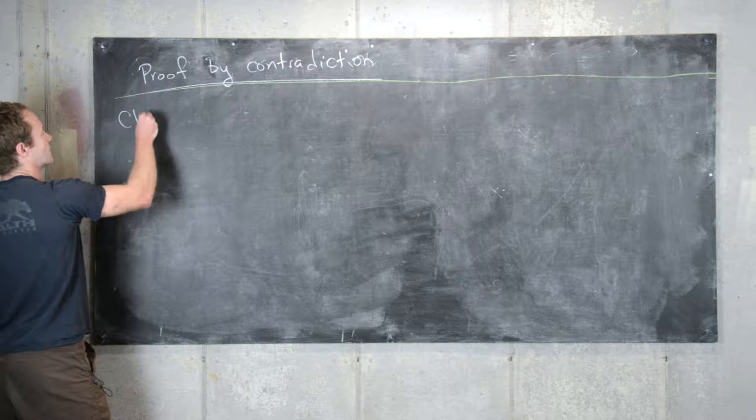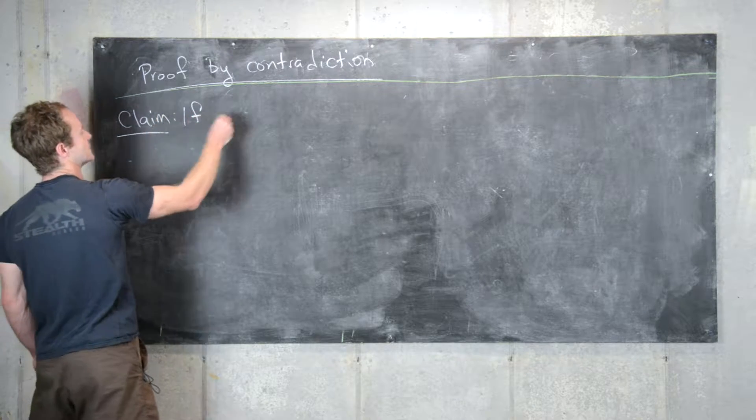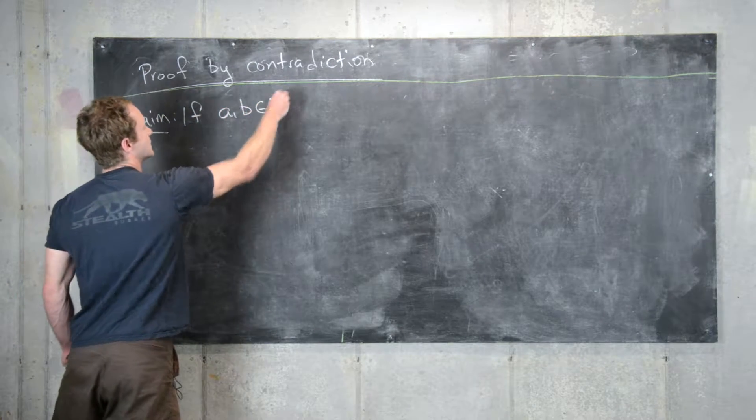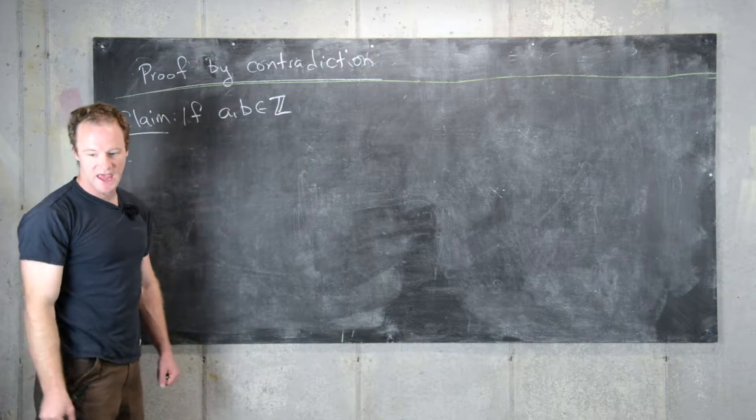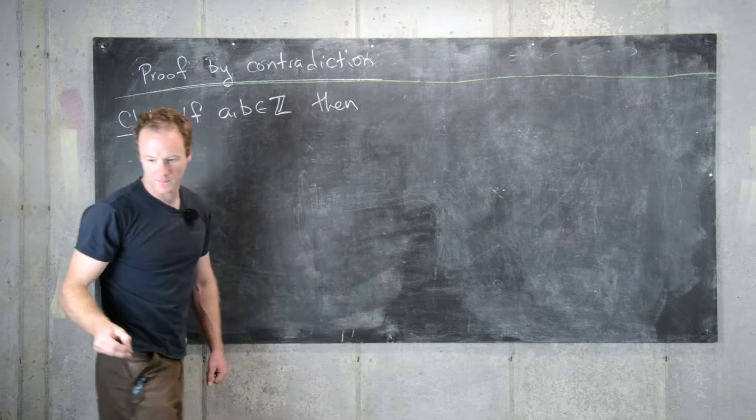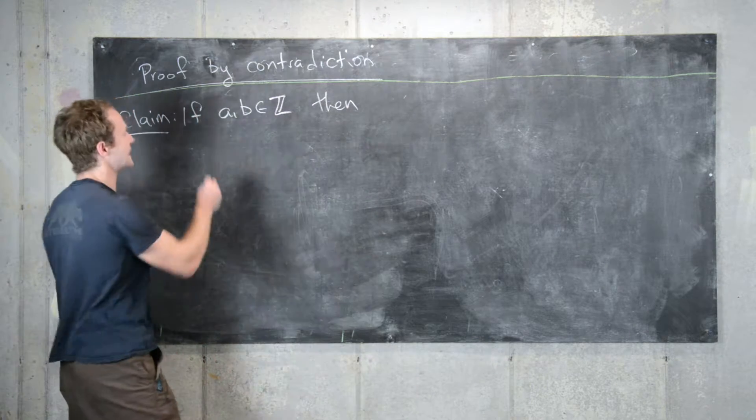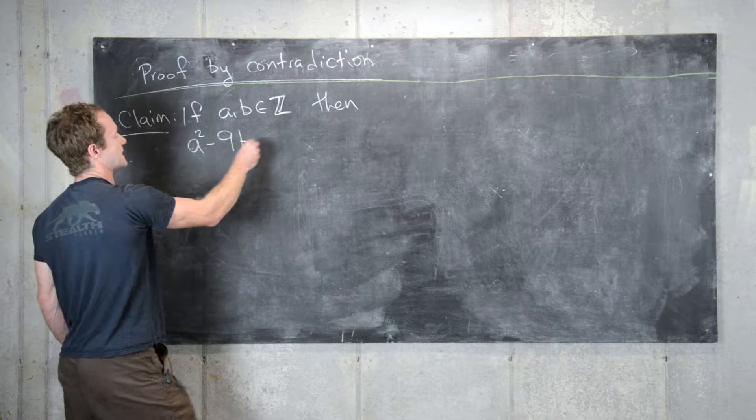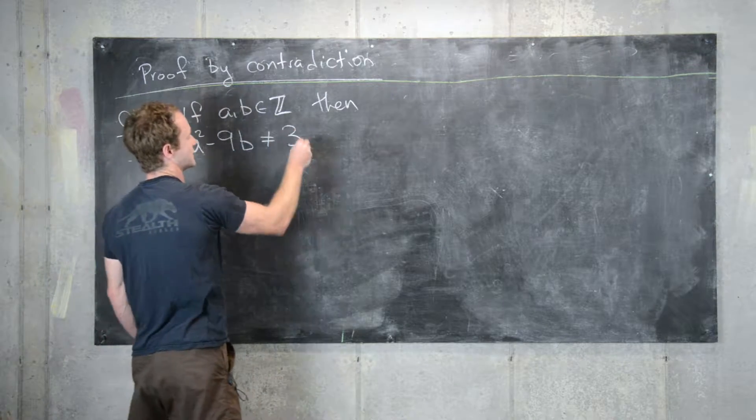So the claim is as follows. If you have two arbitrary integers, a and b, then a squared minus 9b is not equal to 3.